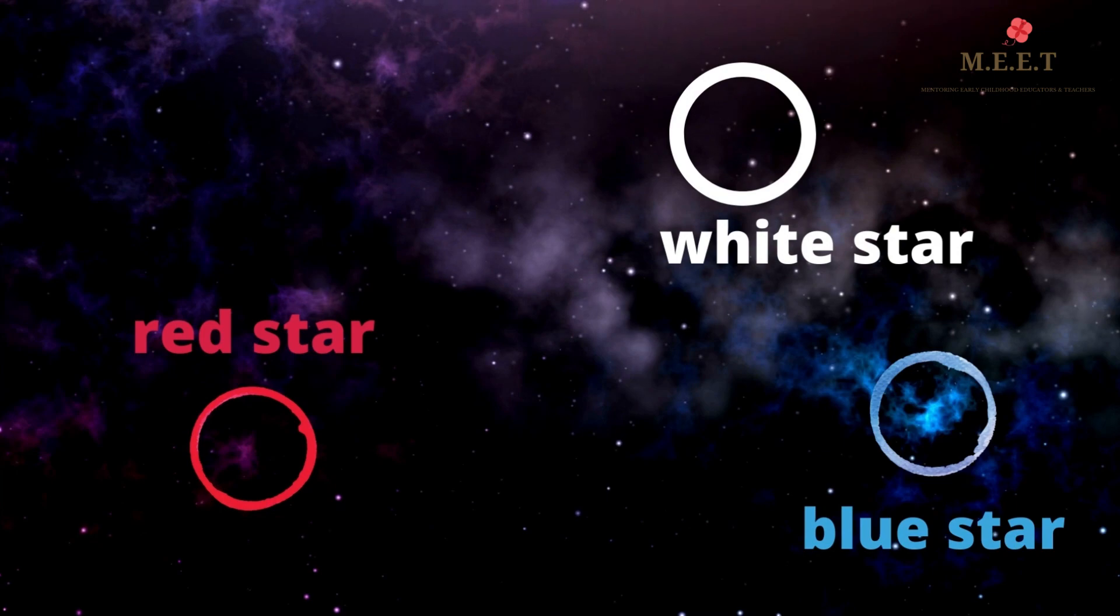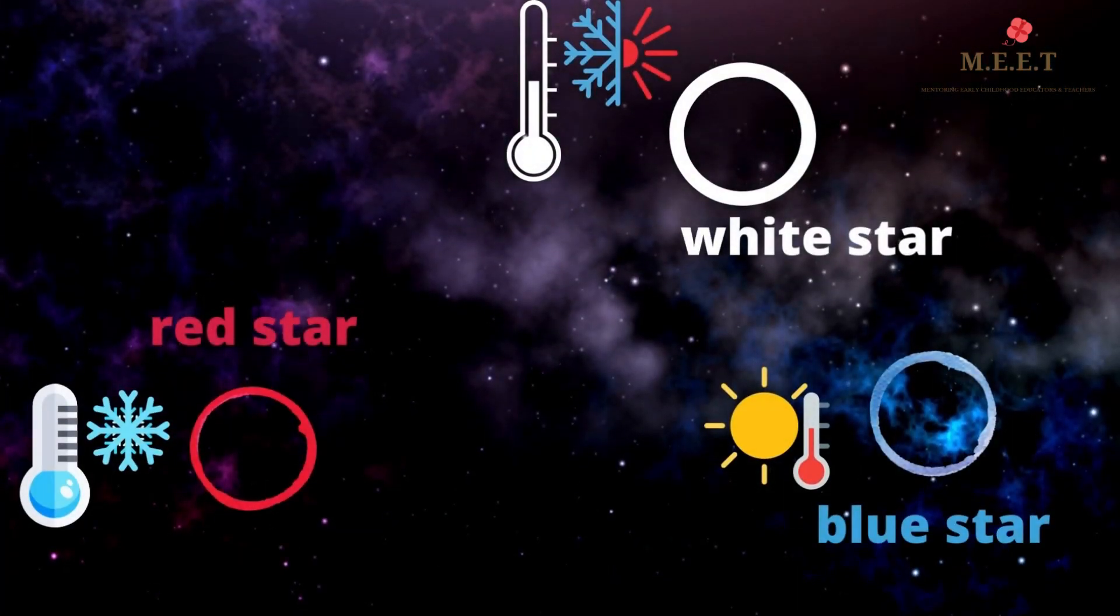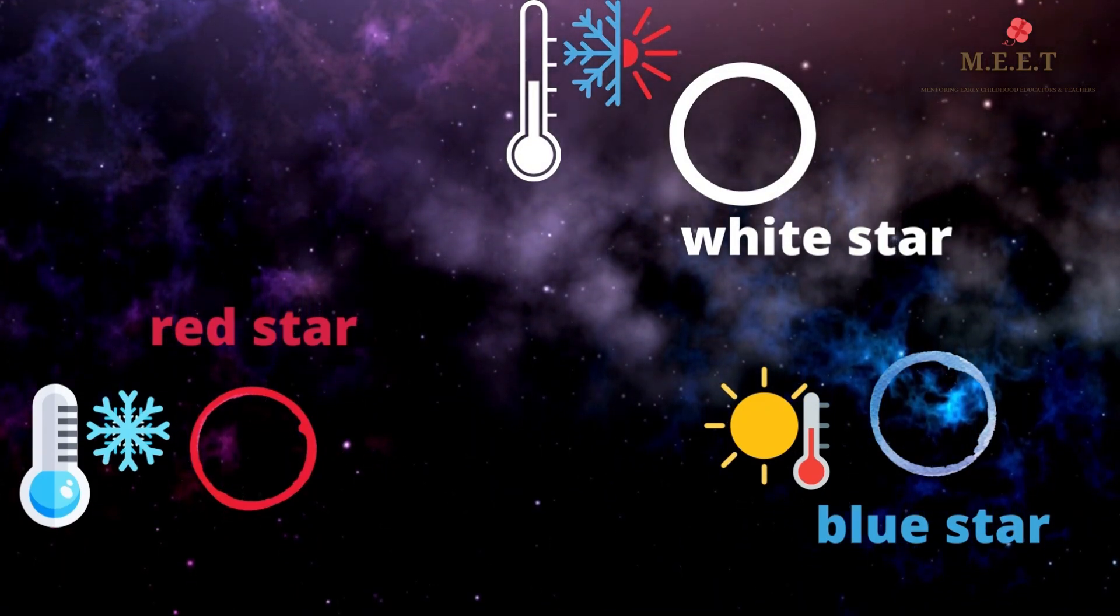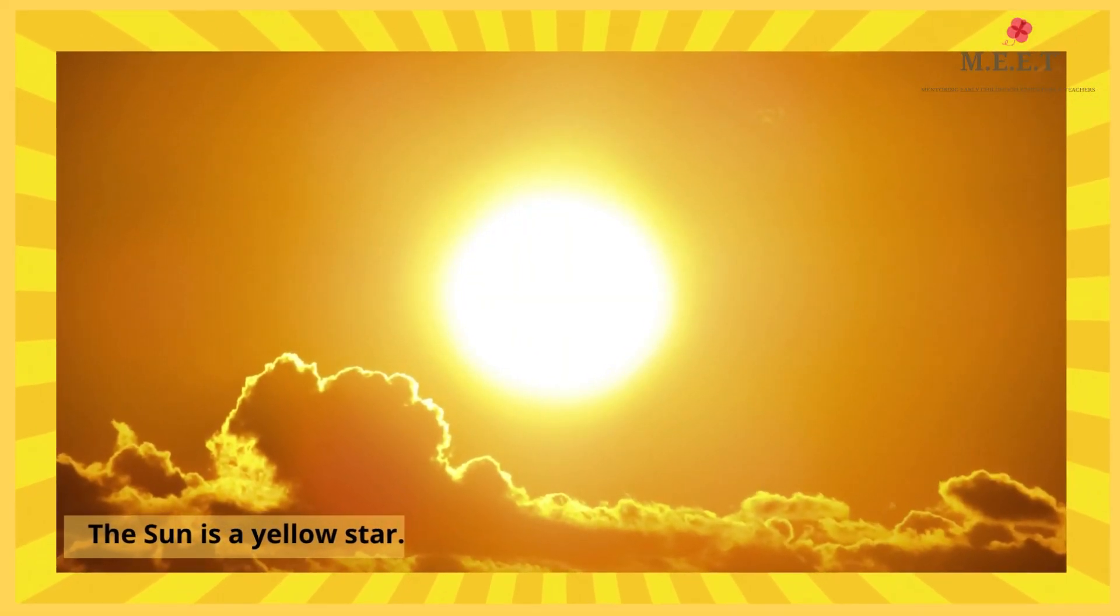There are blue stars, white stars and red stars. The blue stars are the hottest and the red ones are the coldest, while the white stars have a temperature between the blue and the red stars. The sun is a yellow star.